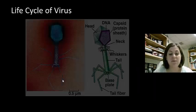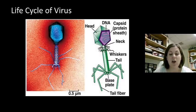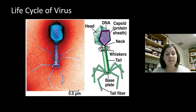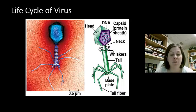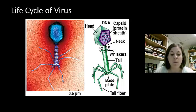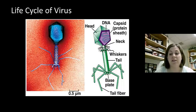Viruses can reproduce inside of a living cell. No living cell is immune to viral infections. Viruses can infect animals, plants, fungi, protists, and even bacteria cells. Viruses that infect bacteria cells are called bacteriophages, and here's a picture of what they look like. Once the virus gains access into the cell, it will begin reproducing. We're going to look at two life cycles viruses use, and we're going to focus on this example, which is the bacteriophage.